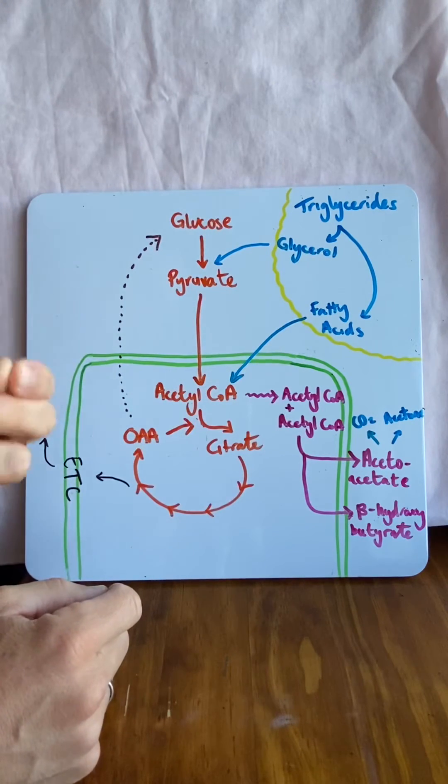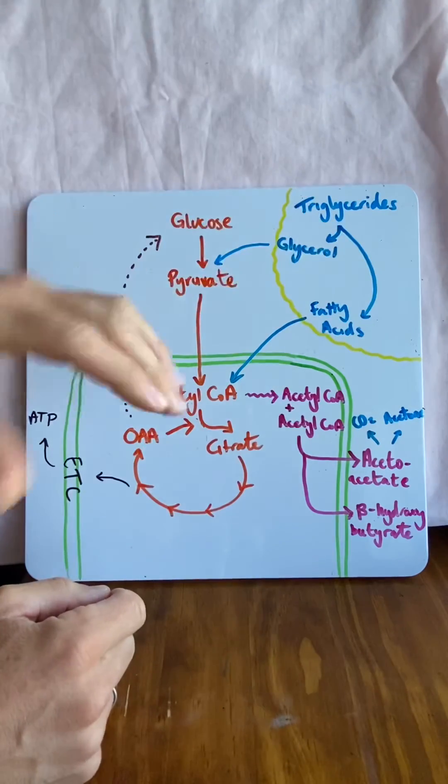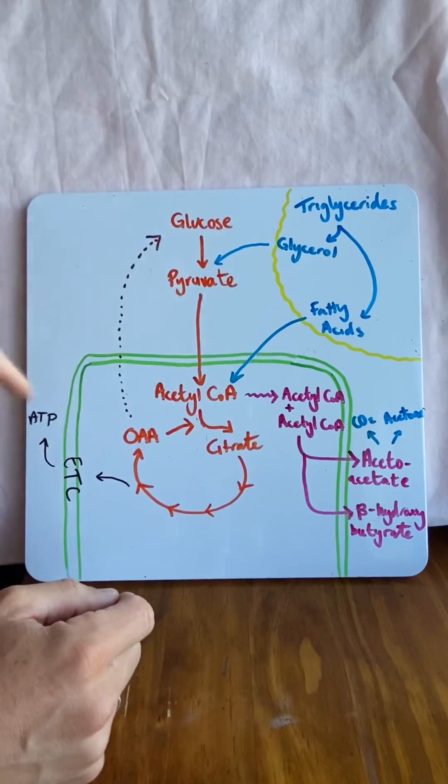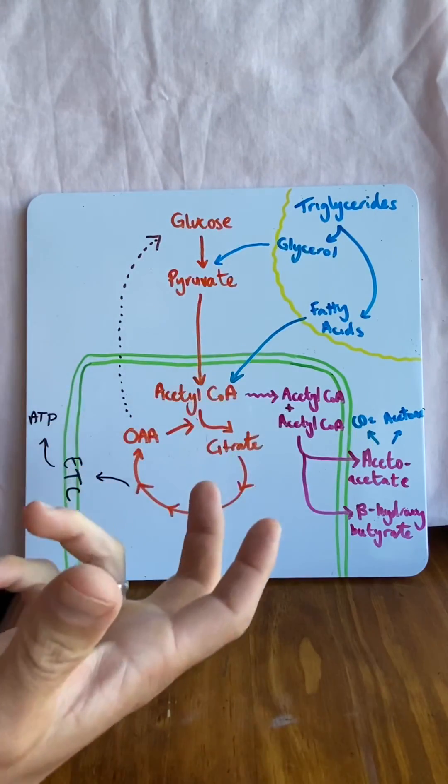If there's insulin present, this is predominantly halted. But if there's no insulin, like in type 1 diabetes, this can kick into action over time and produce too much carbon dioxide and too much acid.